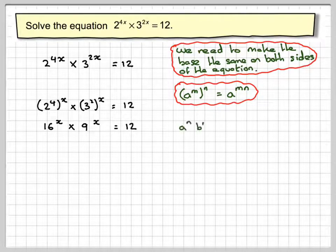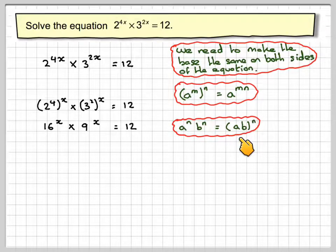Now there's a rule of indices which says a to the n times b to the n, which is what we've got here, is equal to ab to the n.